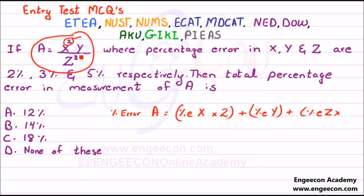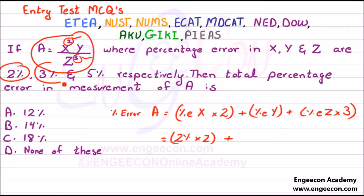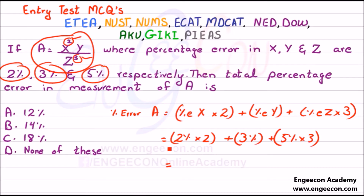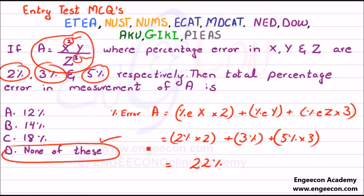From the data: percentage error in X is 2% × 2 = 4%, plus percentage error in Y is 3%, plus percentage error in Z is 5% × 3 = 15%. Solving: 4% + 3% + 15% = 22%. So option D — none of these — is correct.